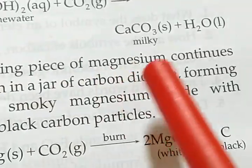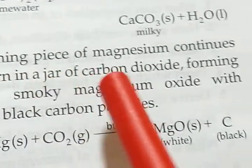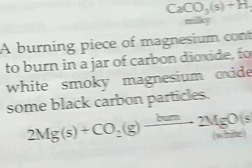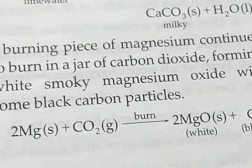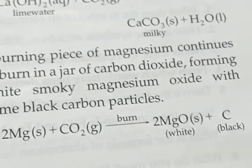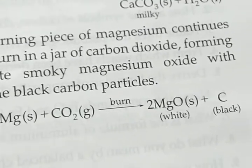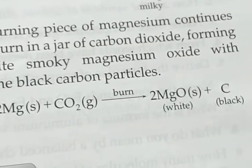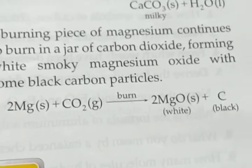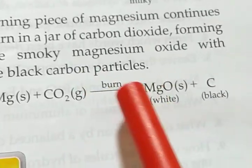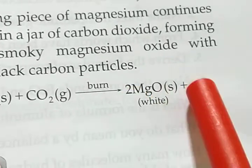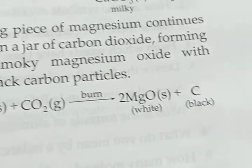Next, a burning piece of magnesium continues to burn in a jar of carbon dioxide, forming white smoky magnesium oxide with some black carbon particles. Normally, if carbon dioxide is kept in a container and we burn magnesium inside it, it will form white smoky magnesium oxide plus with that carbon particles which form as a product. So normally 2Mg, that is solid, carbon dioxide, that is gas. Above the arrow is the condition burn, meaning we are burning it. What is forming? White smoky solid magnesium oxide plus carbon, that is black in color.